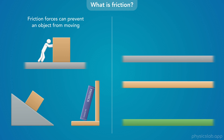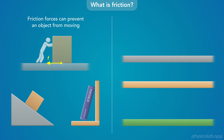Friction forces can act on an object that is not moving, and they can prevent it from moving. If you try pushing a box across a surface and it won't move, it's because the surface is exerting a friction force on the box. If an object is on an incline and it doesn't slide down, there must be a friction force keeping it at rest.